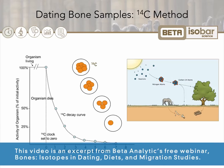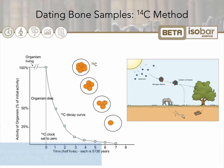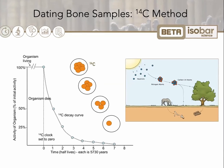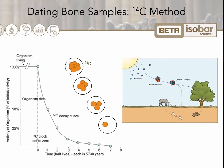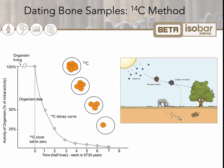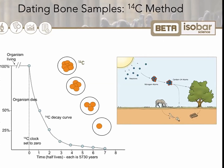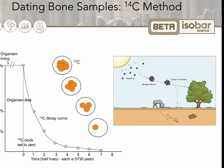Carbon-14 is formed in the upper atmosphere through the effect of cosmic ray neutrons hitting upon nitrogen-14. Other species of carbon are also formed in this process, including carbon-12 and carbon-13. All of these forms of carbon — both the radioactive atom 14C, as well as the non-radioactive counterparts 12C and 13C — are all absorbed by plants and living matter.